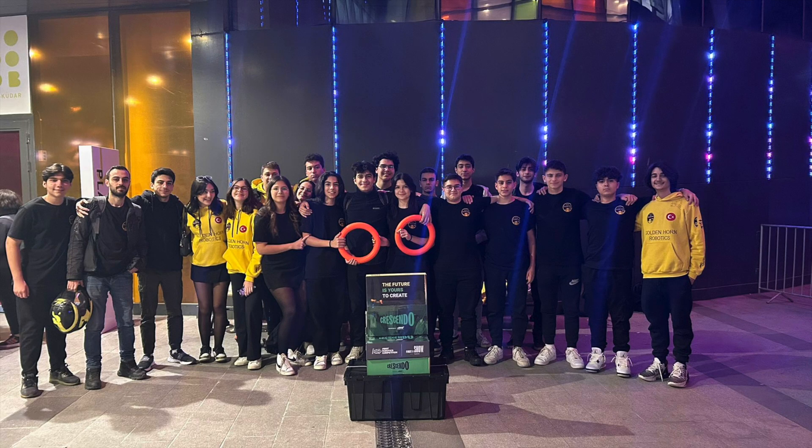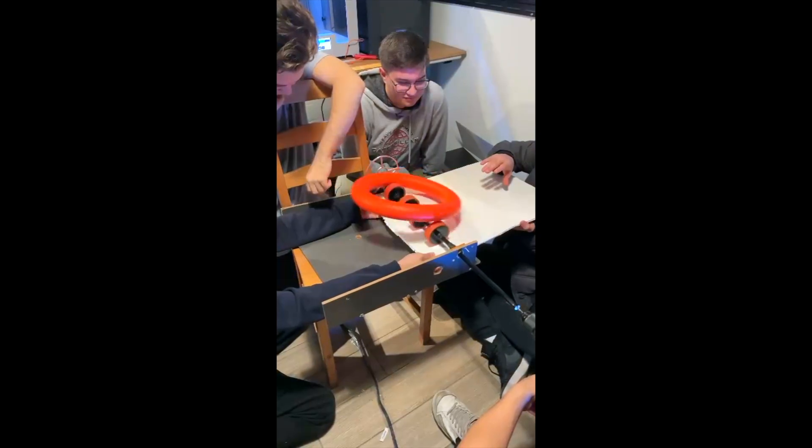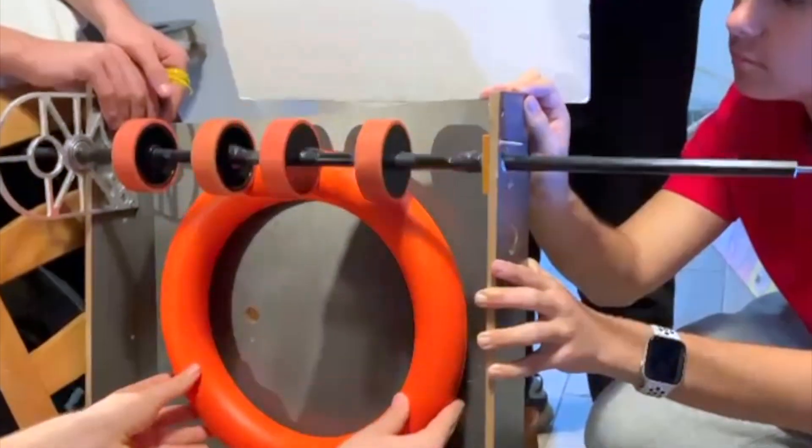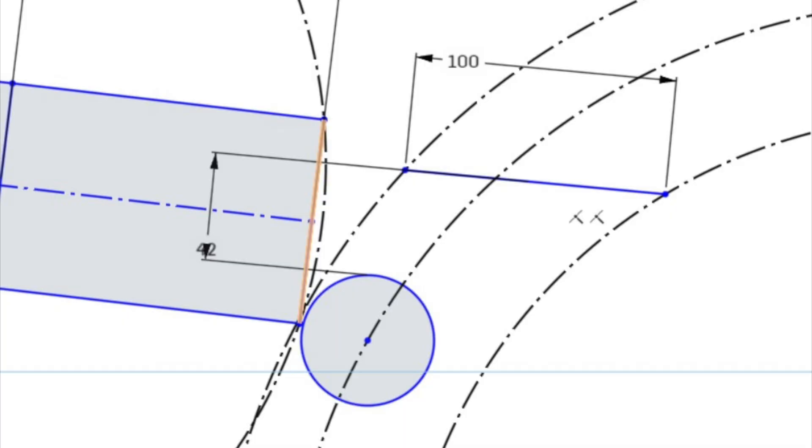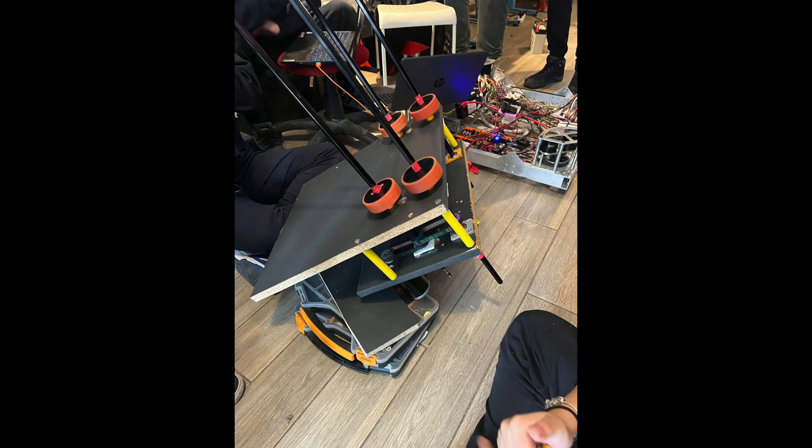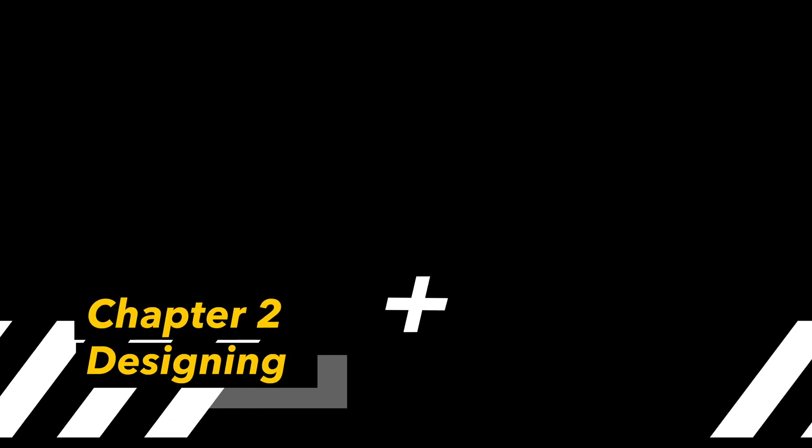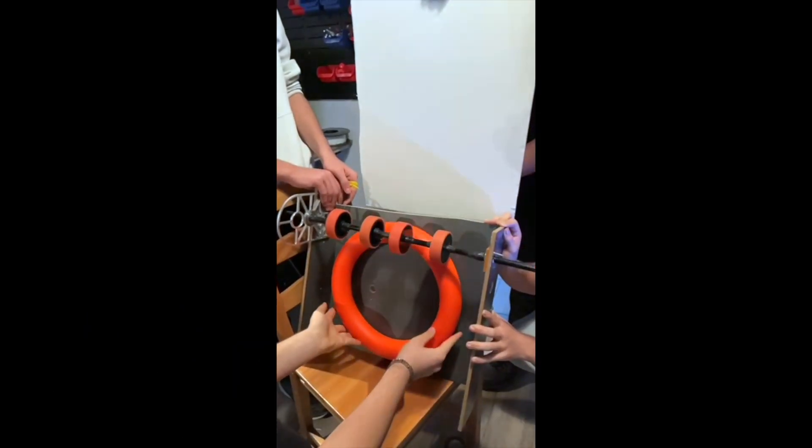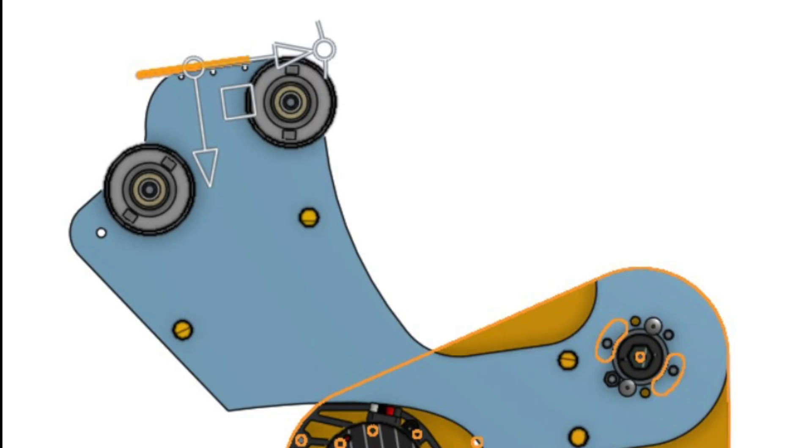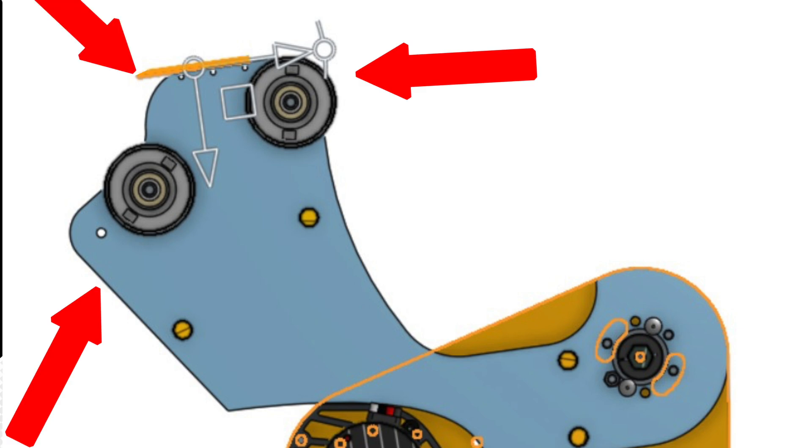The discussion and prototyping process started immediately after the kickoff. After some initial research and discussion, we began prototyping. We experimented with multiple designs and used the analyzed data to improve our prototype. After analyzing the results, we concluded that an intake with two rollers and a void in the middle was the best choice.